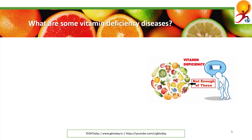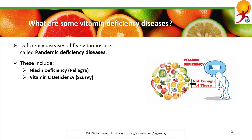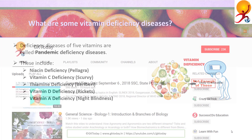What are some vitamin deficiency diseases? The main diseases caused by vitamin deficiencies are called pandemic deficiency diseases. Some examples are: niacin deficiency causing pellagra, vitamin C deficiency causing scurvy, thiamine deficiency causing beriberi, vitamin D deficiency causing rickets, and vitamin A deficiency causing night blindness.